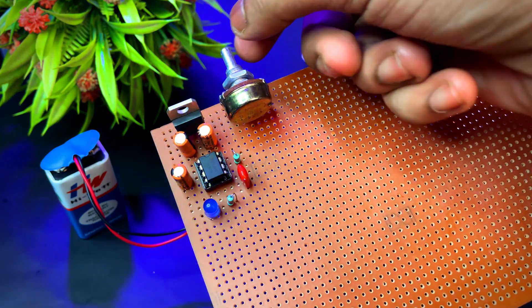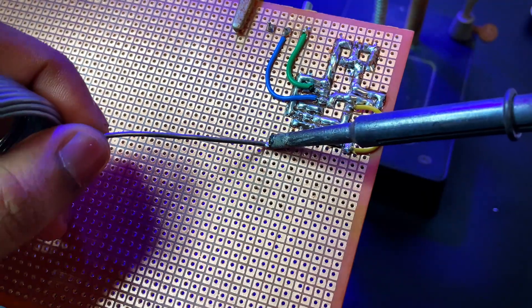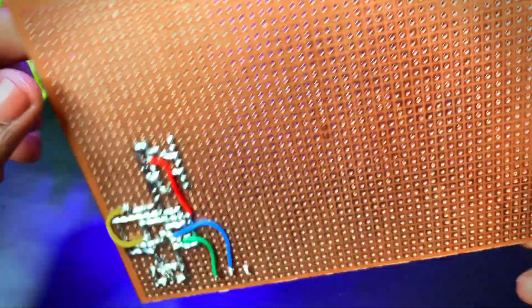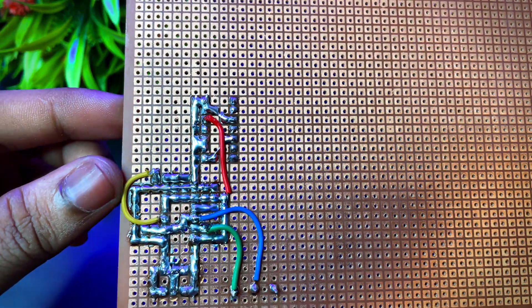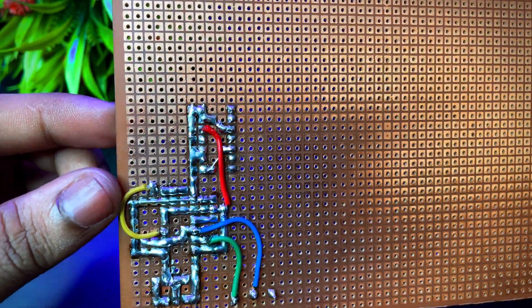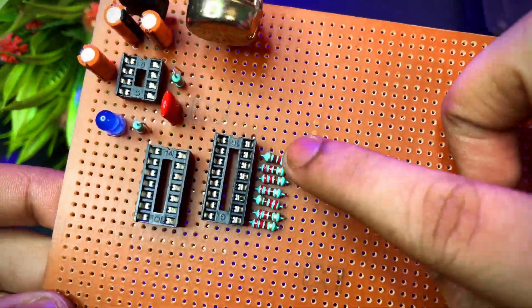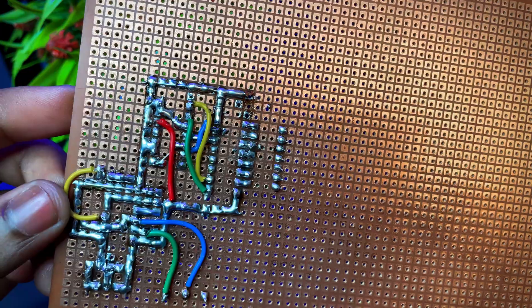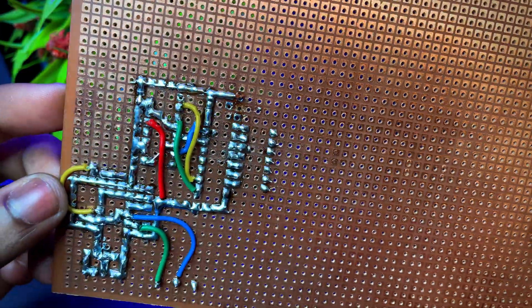Now for the main part, the counter circuit. First, I am placing the 7490 IC. I have connected the output from 555 timer to pin 14 of 7490. And that's the clock A input. Then I am placing the 7447 IC. And these resistors are used for display. Then I connected the BCD output from 7490 to the input of 7447.